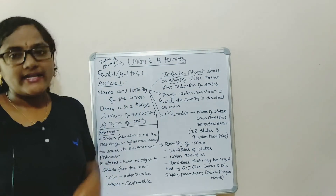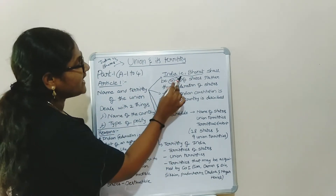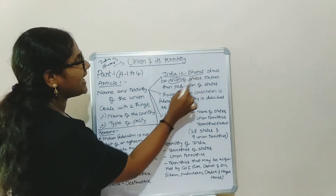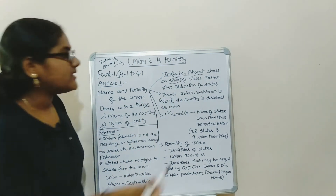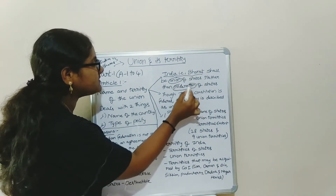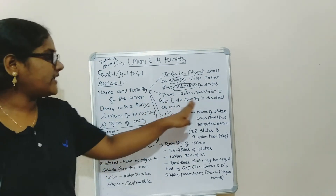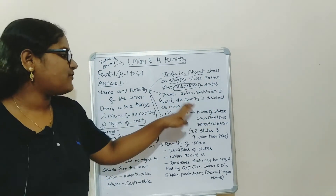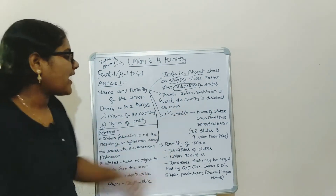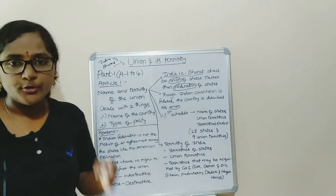Article 1 says that India, that is Bharat, shall be a union of states rather than a federation of states. Though the Indian Constitution is federal, the country is described as a union.